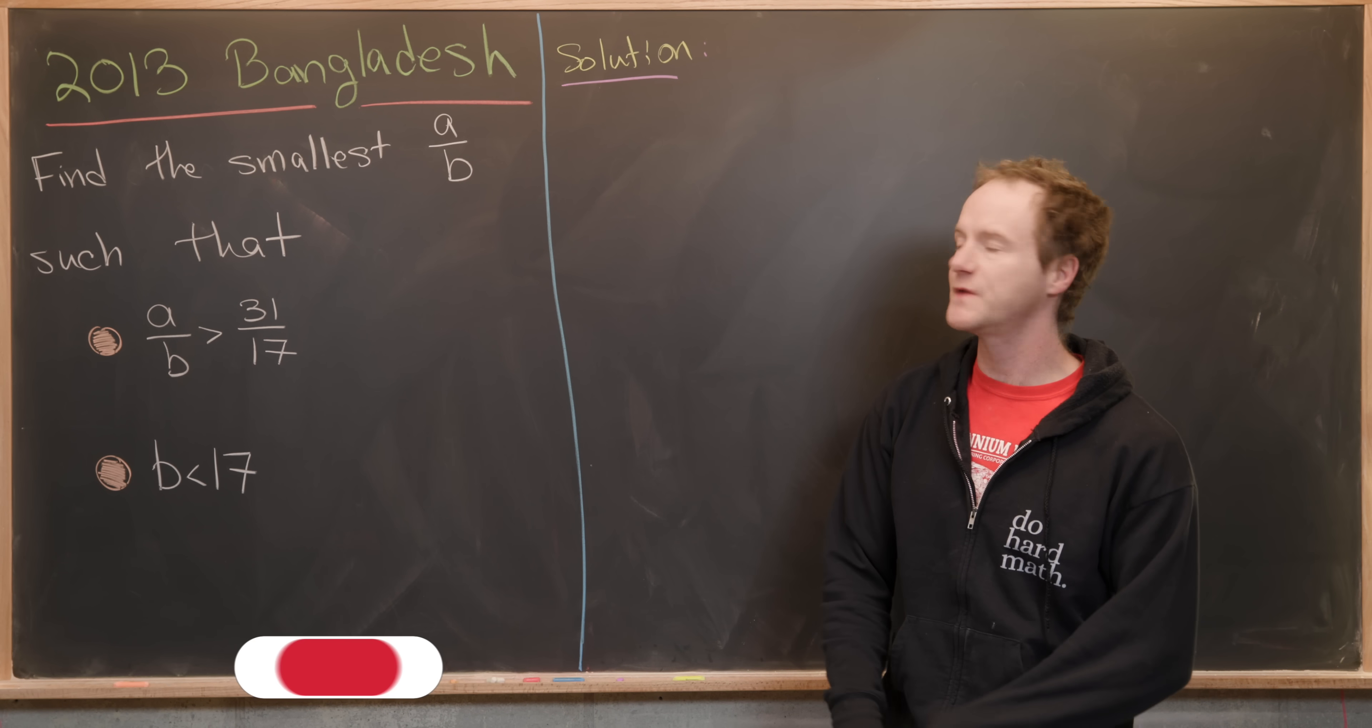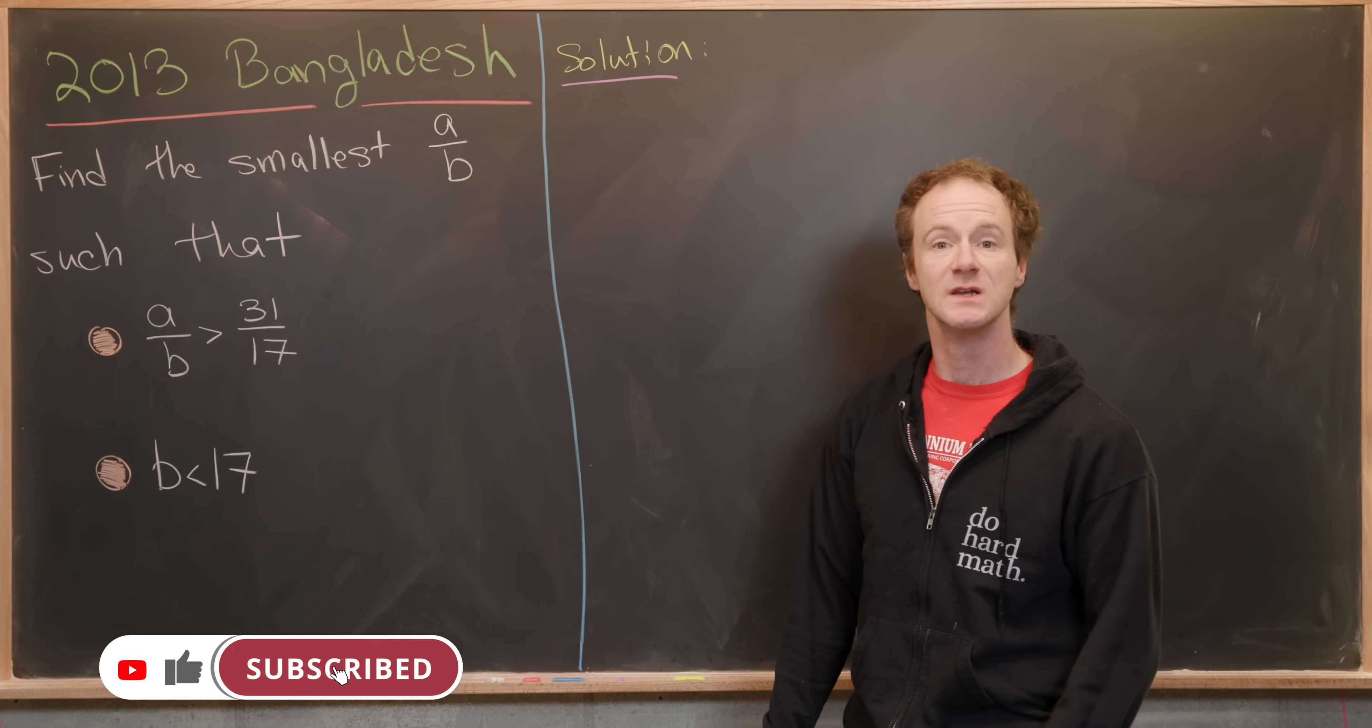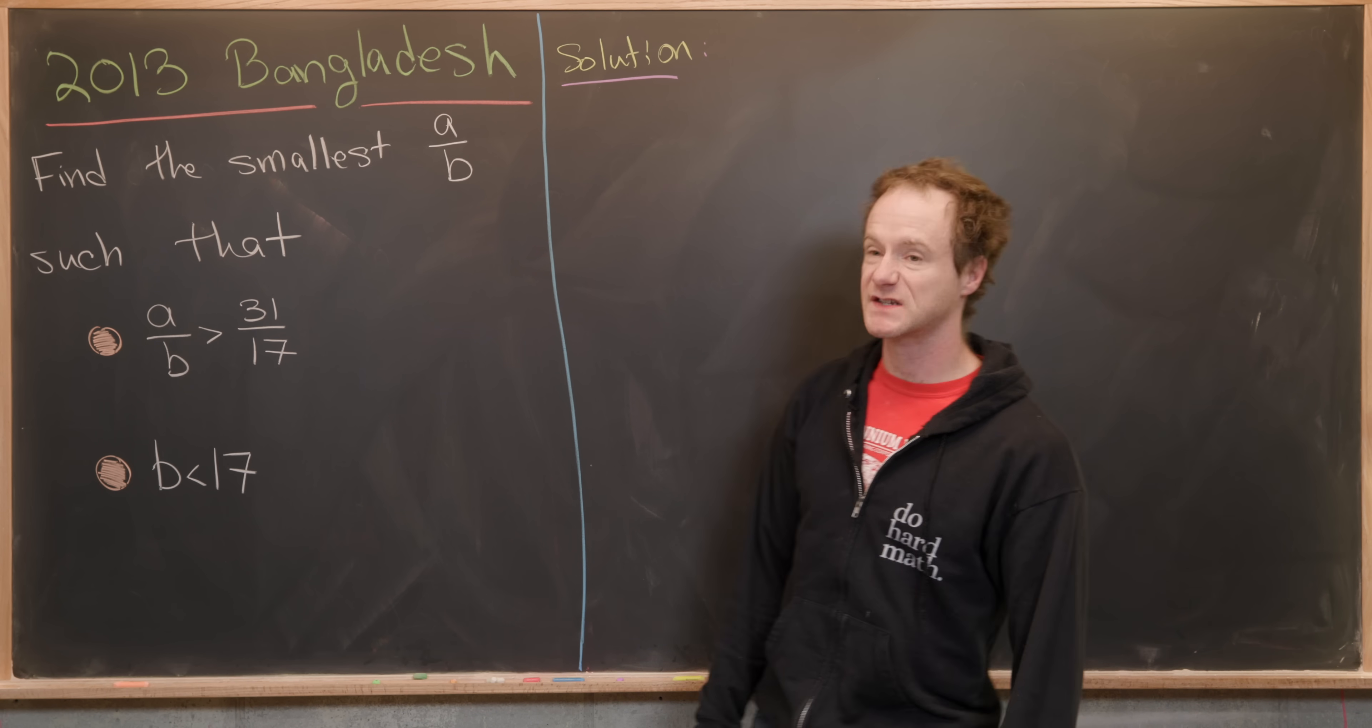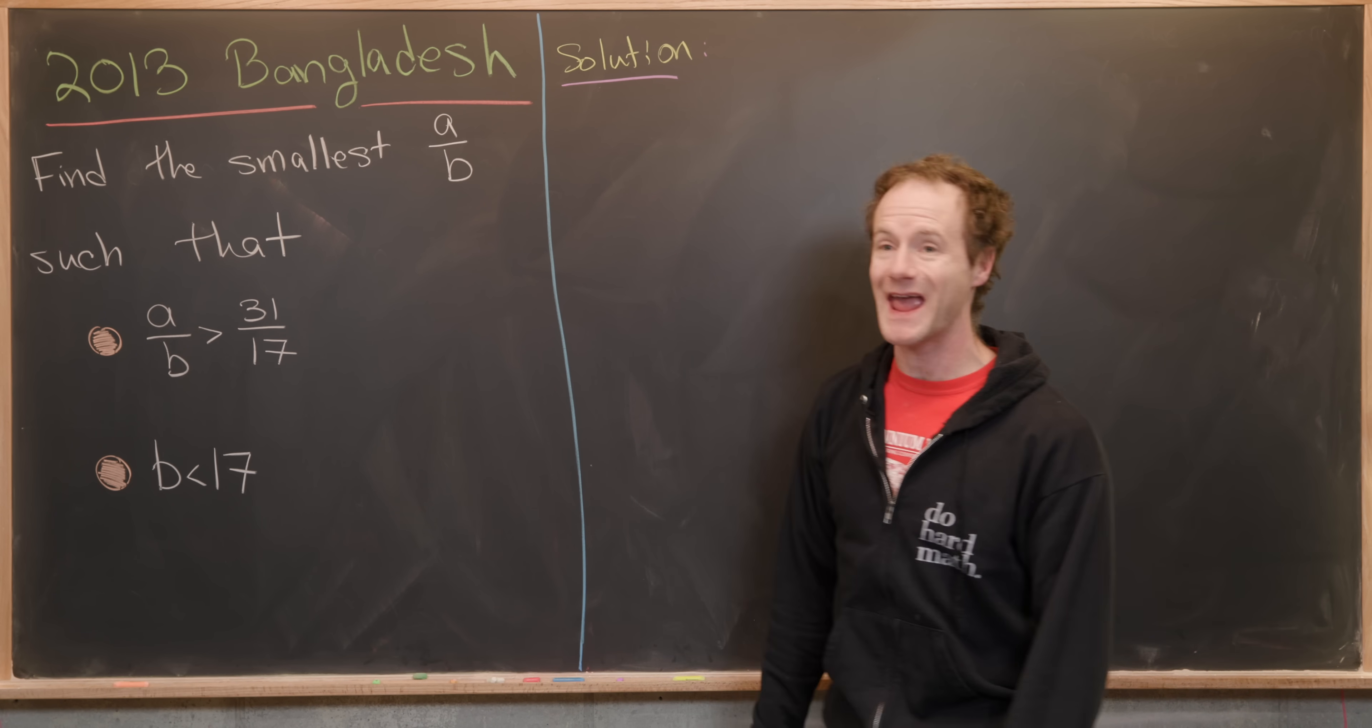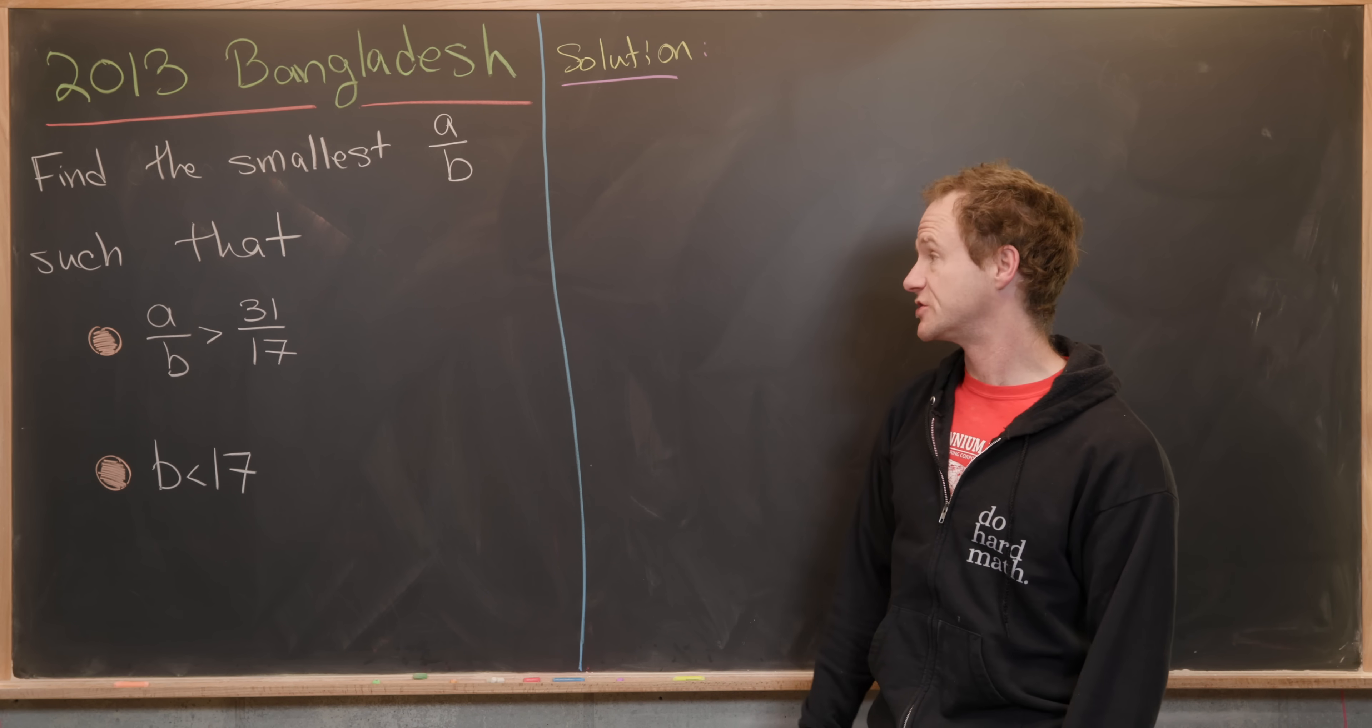Here we're going to look at a nice problem from the 2013 Bangladesh National Math Olympiad. Our goal is to find the smallest number of the form A over B, where A and B are both positive integers.